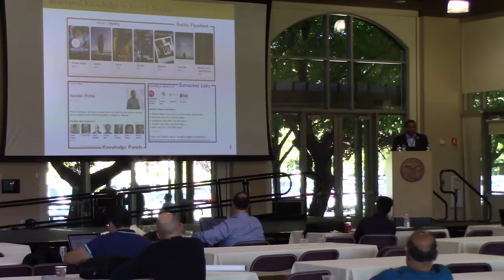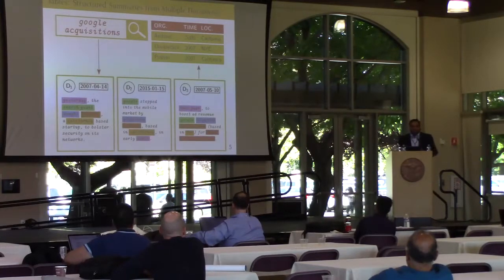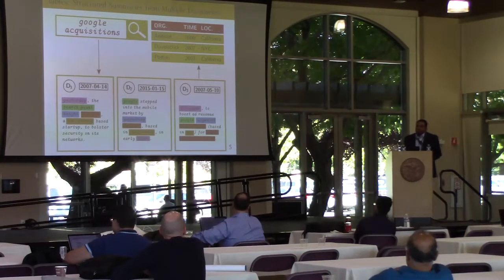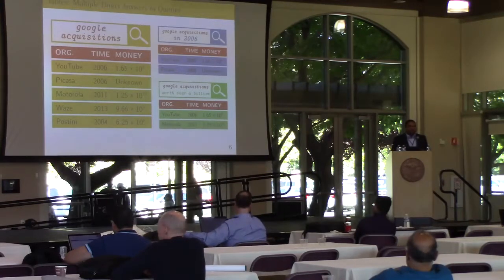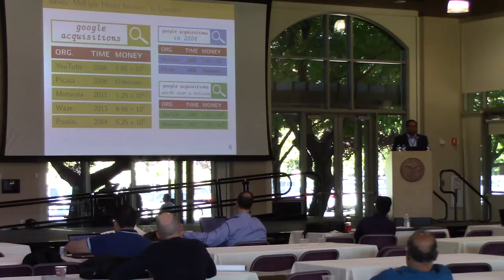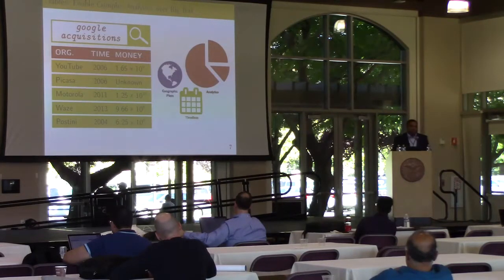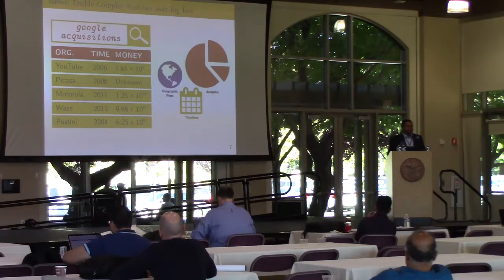Users no longer expect to read documents to find information—they want direct answers displayed in front of them. Tables nicely subsume all these kinds of structured knowledge. They give a structured summary extracted from multiple documents and a gist of the many answers behind a question. If a user is interested in a particular fact, they can go back to the document that helped generate that row. Moreover, if we can generate a table of Google acquisitions with dates and monetary values, we can answer complex questions like what acquisitions were made in 2006 or which cost more than a billion dollars—enabling complex analytics, pie charts, visualizations, and timeline summaries from text.